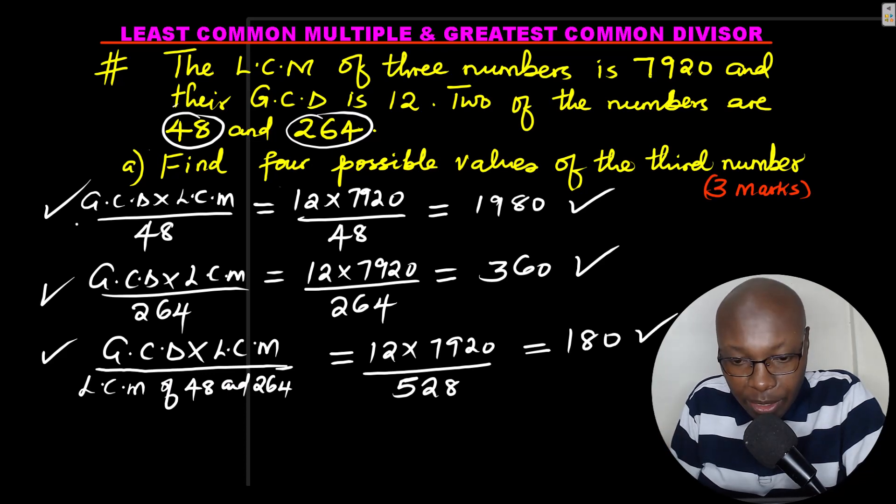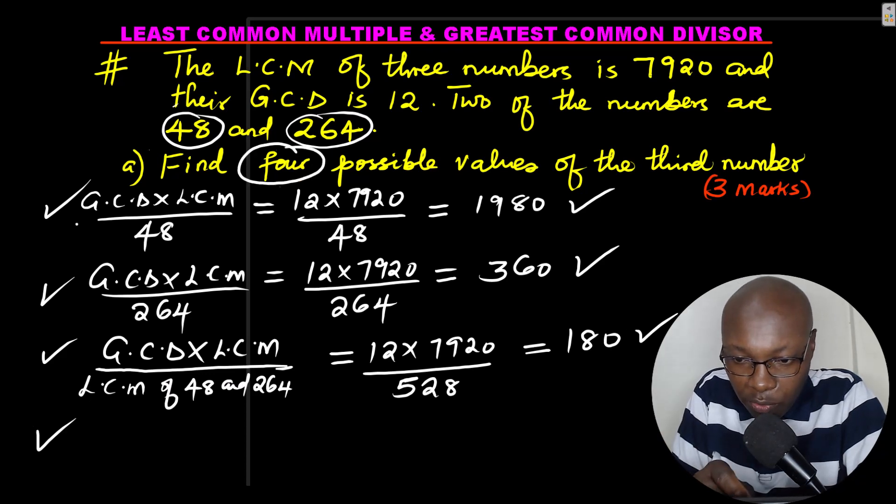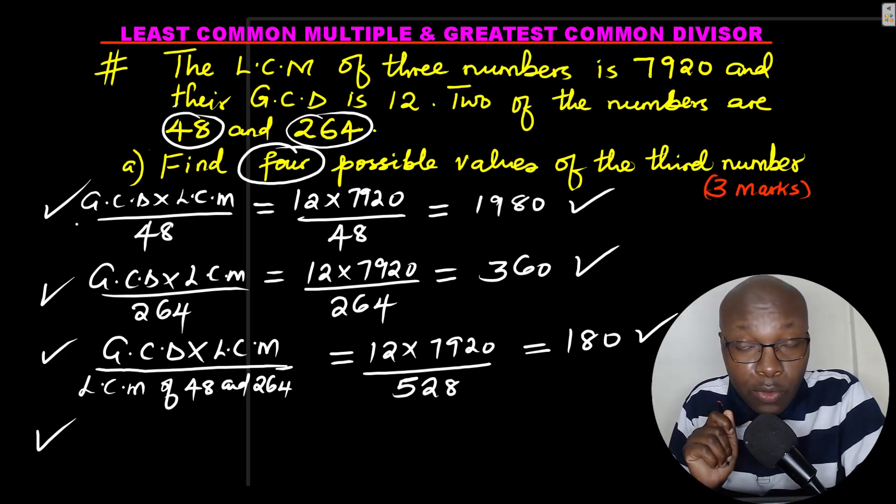So now you have three numbers. The last one, you're required to get the four possible values. So you have three possible values of that number. Now, the last one...